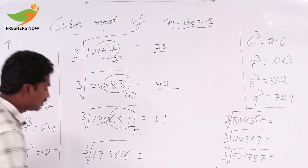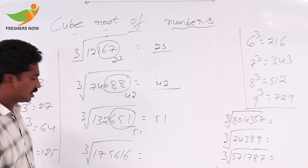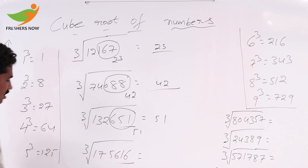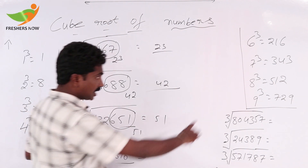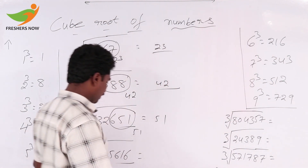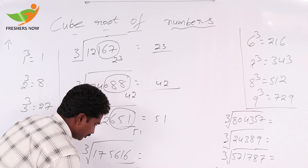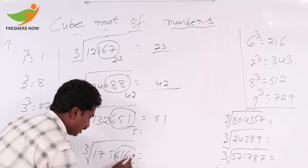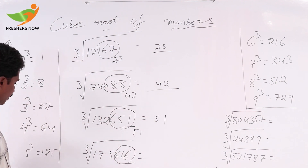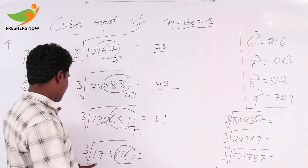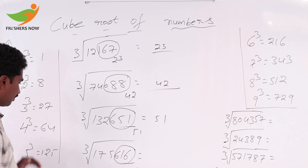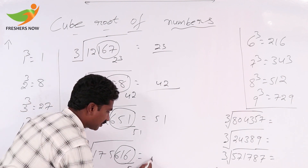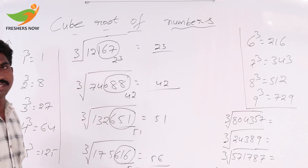Next, cube root of 175,616. Units place value: 6 cube is 216, so we write 6 here. Keep and reduce away — 175 is there. 5 cube is 125, 6 cube is 216. 5 cube, 125, is less than 175, so here we can take 5 only. That value is 56.